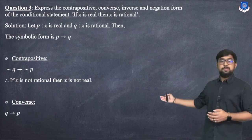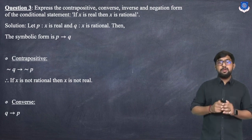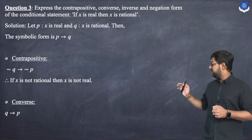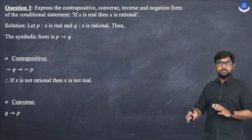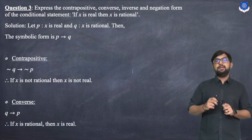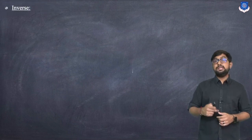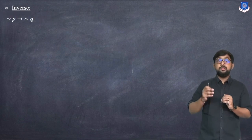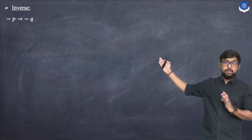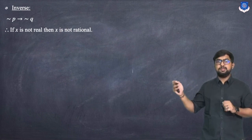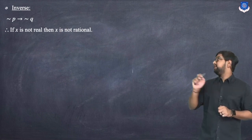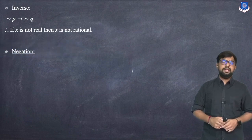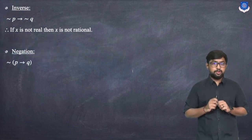The converse form Q → P in statement form: 'If X is rational then X is real.' The inverse of P → Q is ¬P → ¬Q. In statement form: 'If X is not real then X is not rational.'